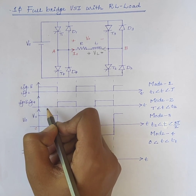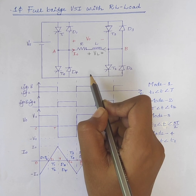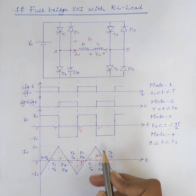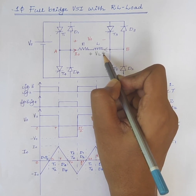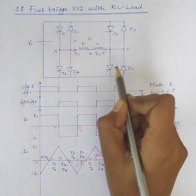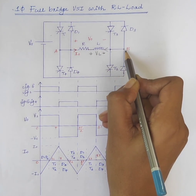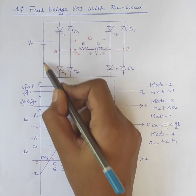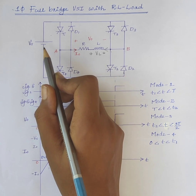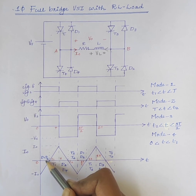During this period, firing pulses are removed from T3 and T4. Therefore the thyristors T3 and T4 are turned off. Due to the inductive nature of the load, the load current does not reduce to zero instantaneously. Due to this self-induced voltage VL, diodes D1 and D2 are forward biased. Current flows through the path: load, D1, source, D2, back to the load — that is from positive to negative. Thus in this mode, the stored energy in the load inductance is returned back to the source and load current decreases exponentially, going to zero at instant T1.